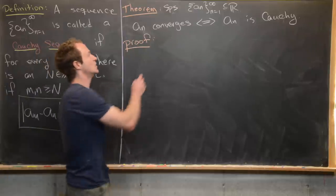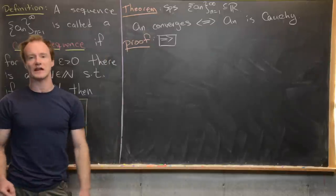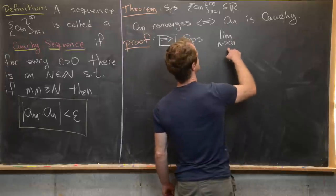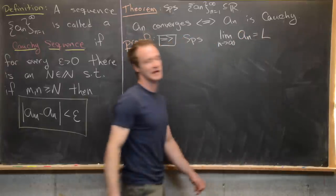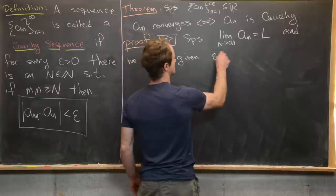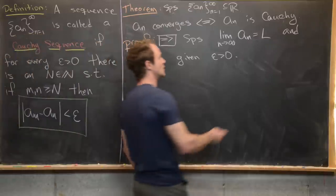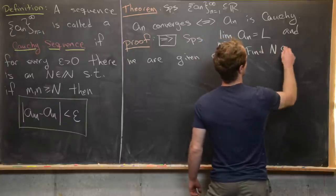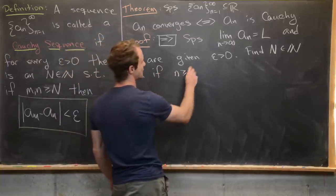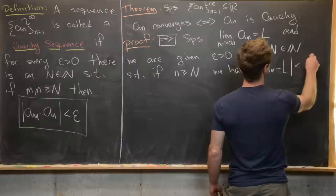Let's look at the forward direction first: we suppose that a_n converges and show that it is Cauchy. Suppose a_n converges to l, so the limit as n goes to infinity of a_n is l, and we are given some arbitrary epsilon > 0. Using the convergence of a_n, we find a natural number N such that if n ≥ N, then |a_n - l| < epsilon/2.